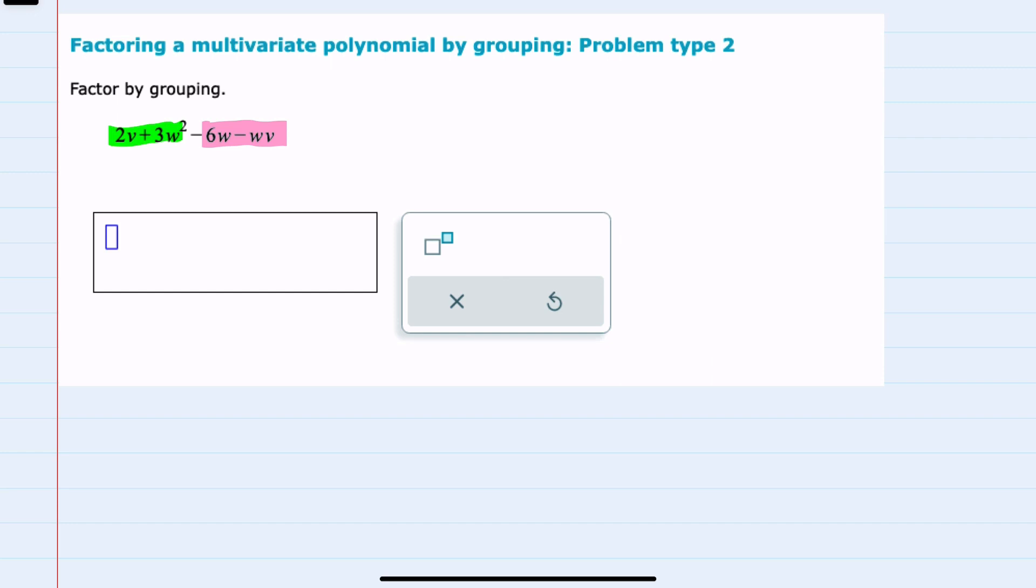The 2 and the 3 do not have a common factor; one of them is v's and the other is w's as the variables. So before grouping these together, I'm going to rearrange the terms so that I will be able to factor something out of each pair.